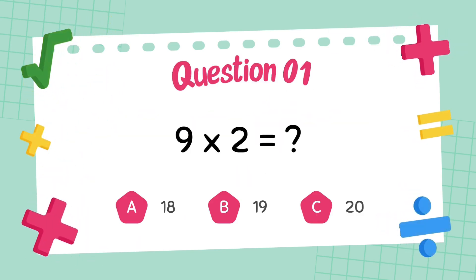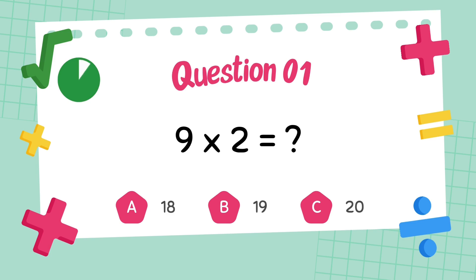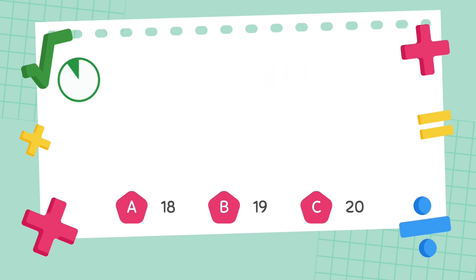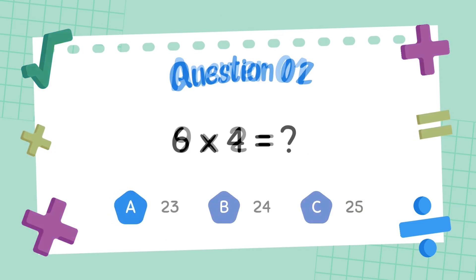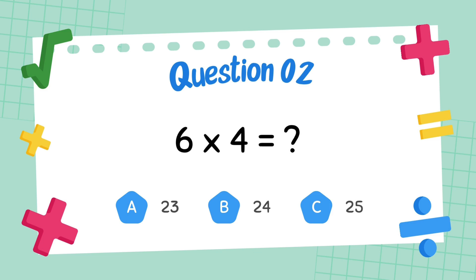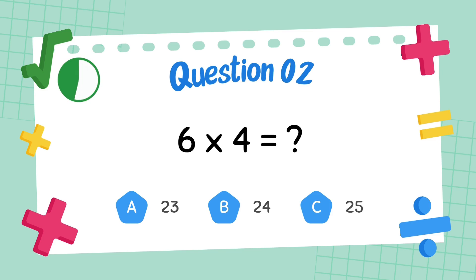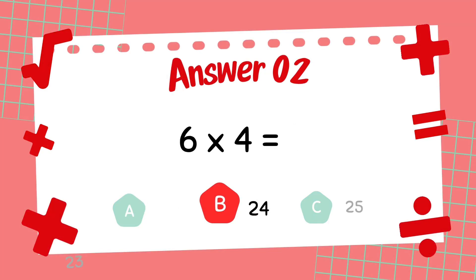What does 9 multiply 2? The answer is 18. What does 6 multiply 4? The answer is 24.